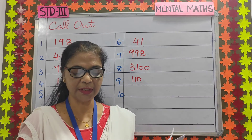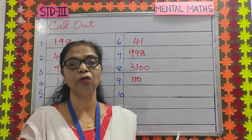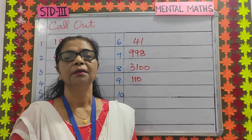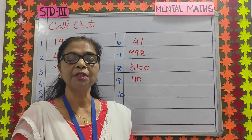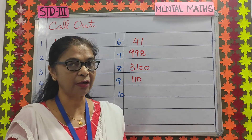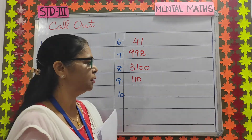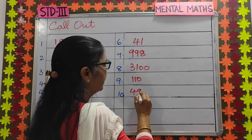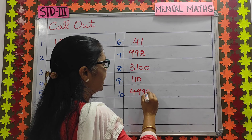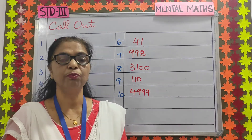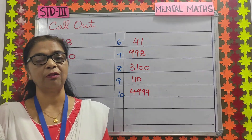Number 10: dash comes just before 5,000. 4,999 comes just before 5,000.